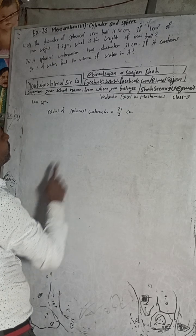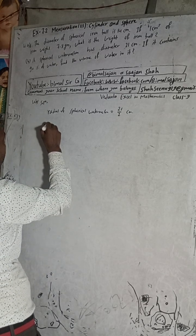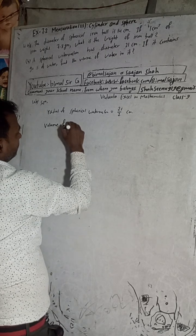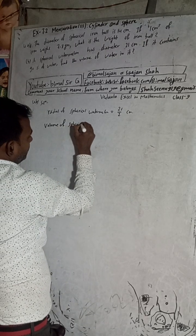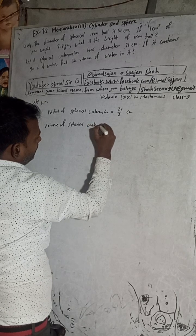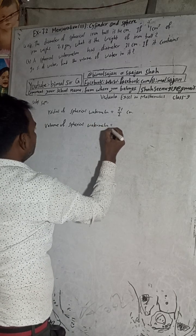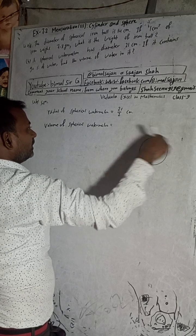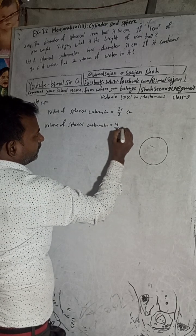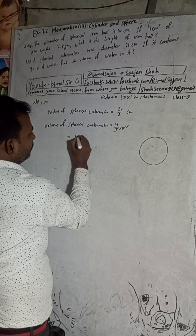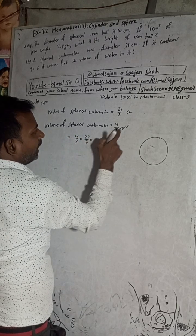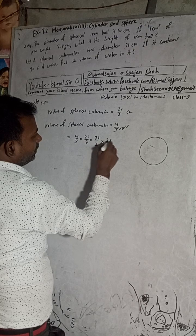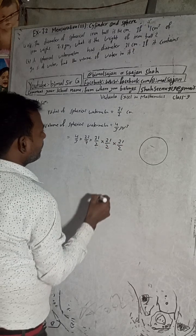Now we will calculate the volume of the spherical watermelon. The volume of a sphere is equal to 4/3 × π × r³. So: 4/3 × (22/7) × (21/2)³ — that is, 21/2 × 21/2 × 21/2.